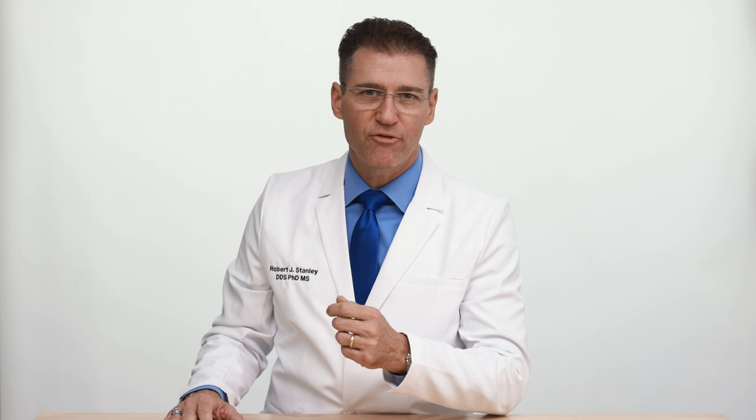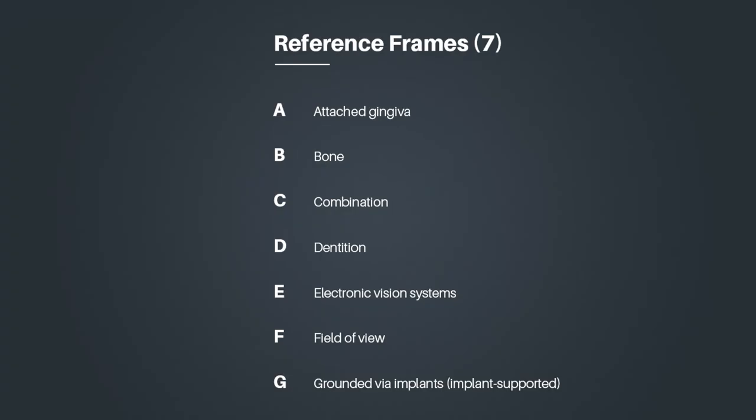Type 4 can also be called fully guided. This is the gold standard for implant placement. Next, let's talk about the reference frames. These aren't in order of efficiency — they're simply listed in an easy-to-remember order, A through G.